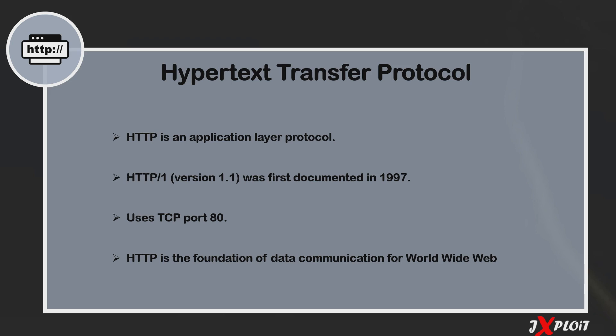The first version of HTTP, that is HTTP version 1.1, was first documented in the year 1997. HTTP uses port 80 for all its communication, and most importantly, HTTP forms the foundation of data communication for the worldwide web.